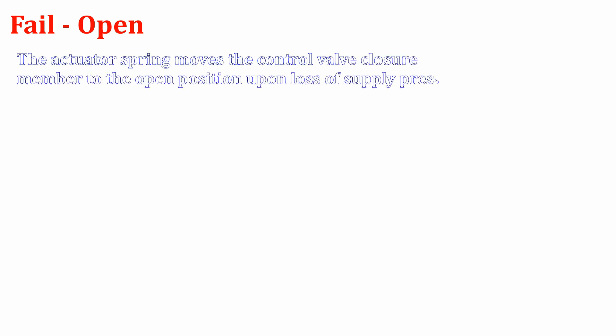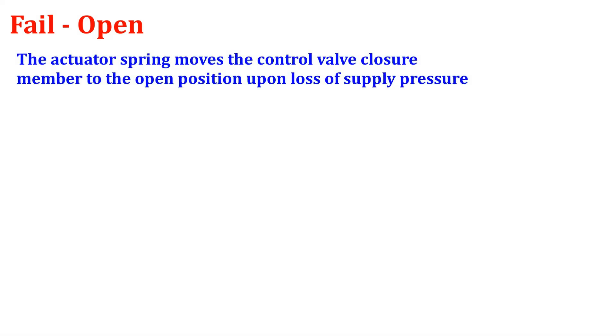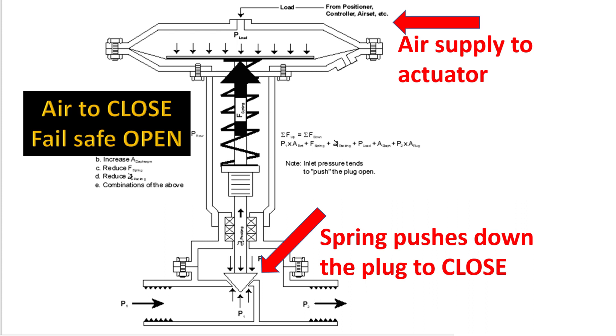First, let's see what is basically failsafe open. In this failsafe mode, the actuator spring moves the control valve closure member to the open position upon loss of supply pressure. You can see here this is the actuator assembly, and we are supplying air at the top of the actuator since it is a direct acting actuator. The main principle of an actuator is the force balance between the actuator spring and the diaphragm.